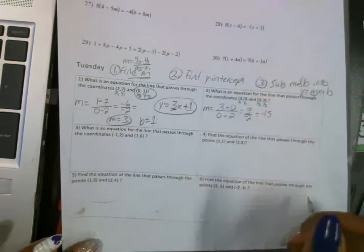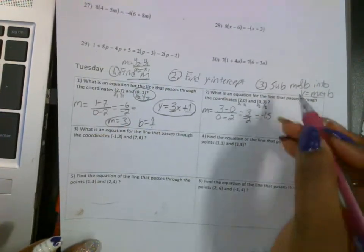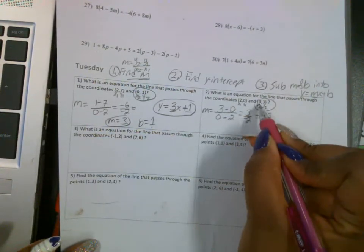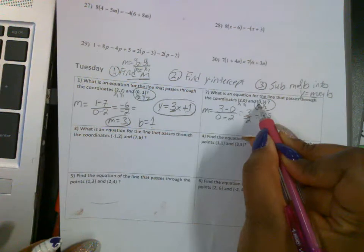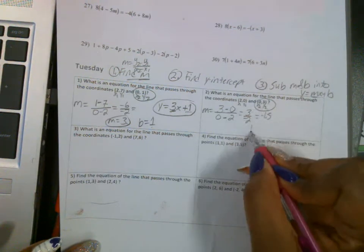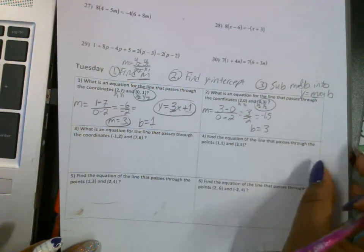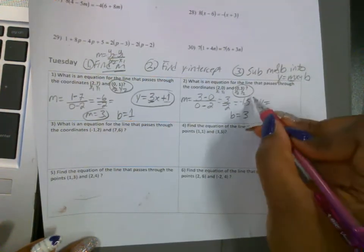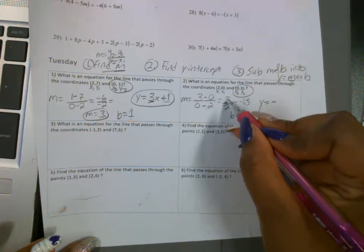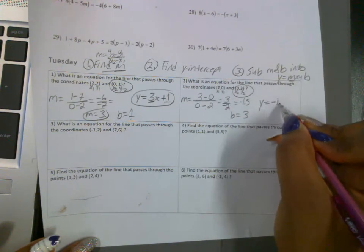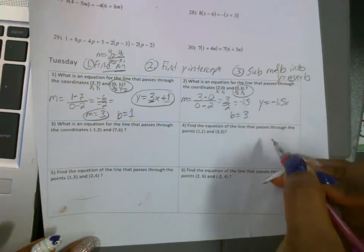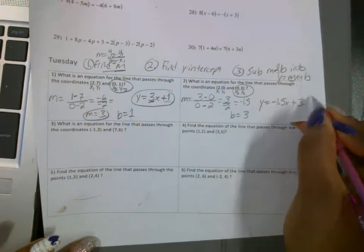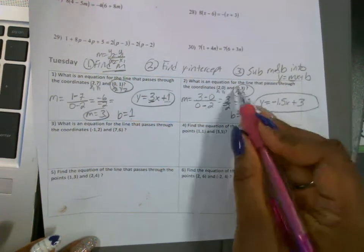So now we're looking for b. b is already given again, which is where x equals 0. So my b here is 3. To write my equation: y equals... my m is negative... I can write it as the fraction 3 over 2, or as a decimal... x plus 3. This is the equation.